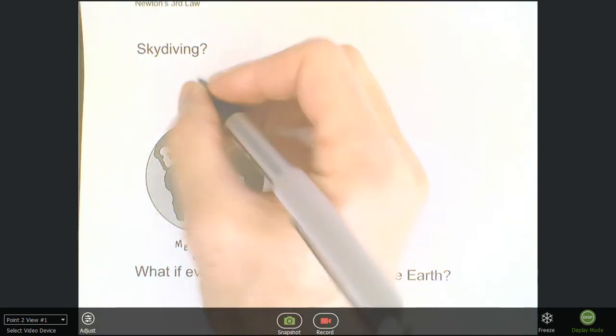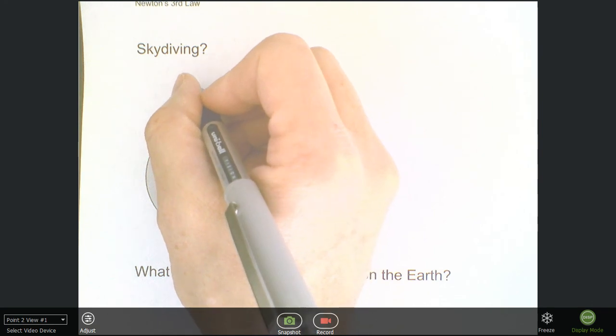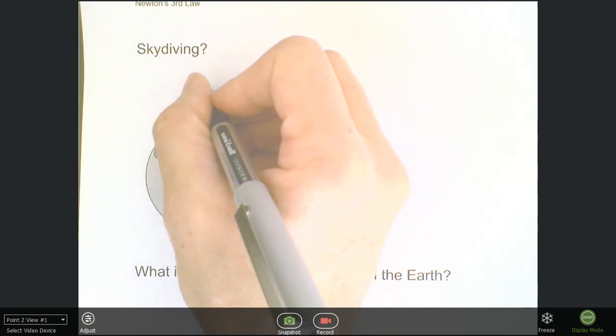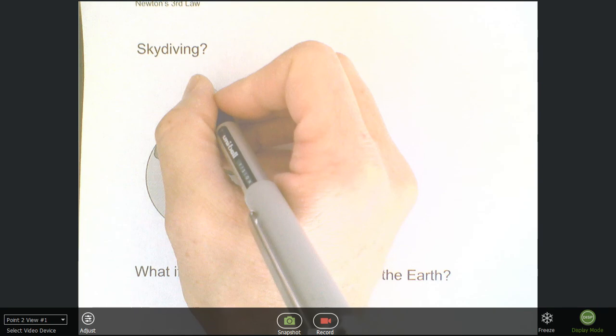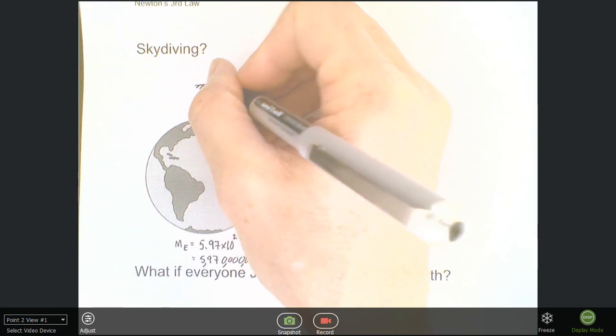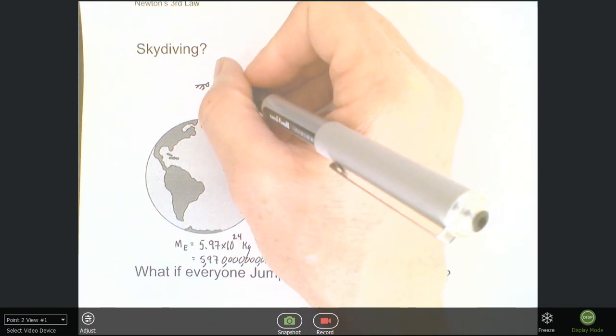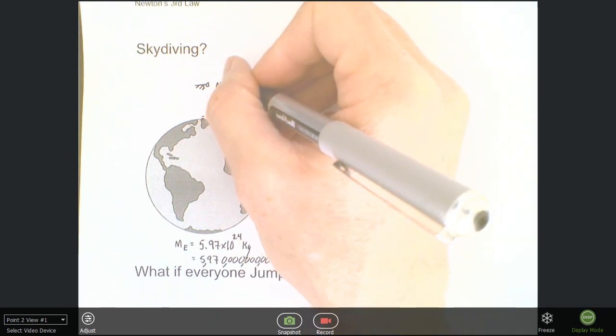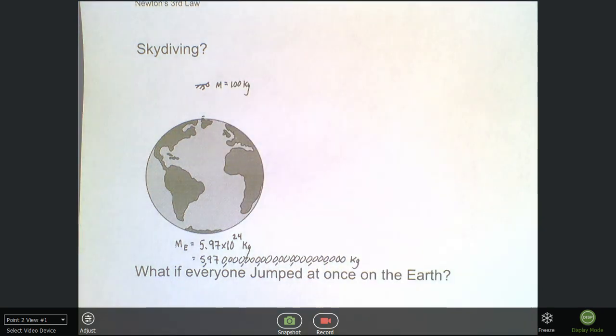Let's assume that you have a person and they're going to skydive. This person is skydiving from way up, and it looks like a dog, I don't know, whatever. And so this person, let's say they have a mass of, it's a big person, 100 kilograms.